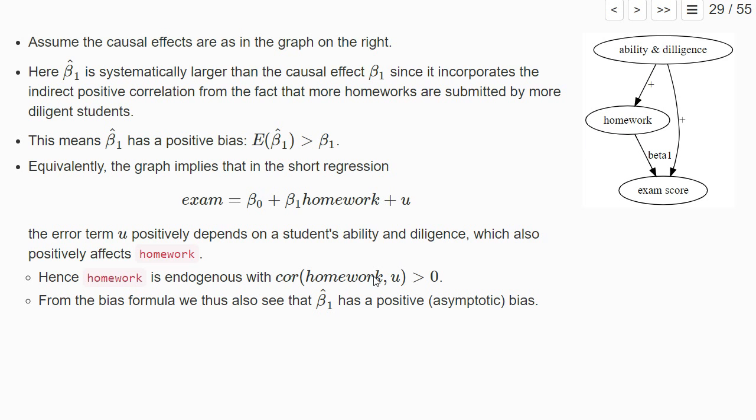And we see then from the bias formula that if this correlation between homework and the error term is positive, we will also have a positive bias. So both ways to think about it are very similar here and lead to the same conclusions that we will most likely have a bias in our OLS estimator.